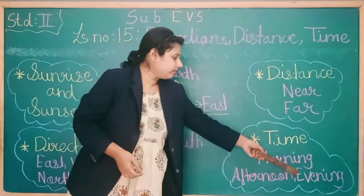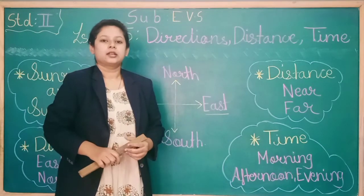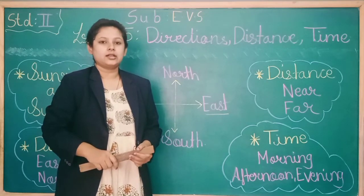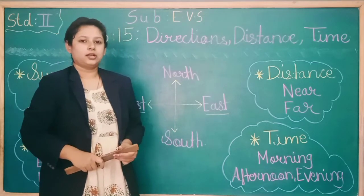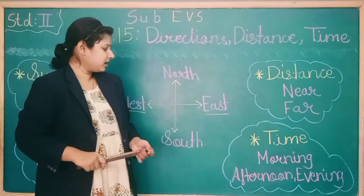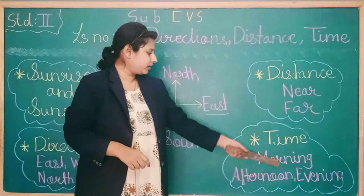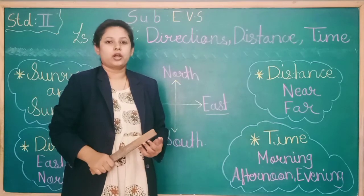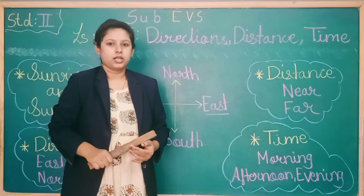And in the evening, the sun starts setting down. In the evening, the sun starts setting down. As the sun goes from morning to afternoon to evening, the time is decided - whether it is morning, afternoon, or evening.